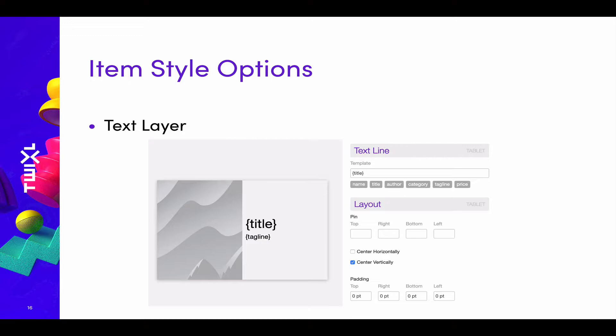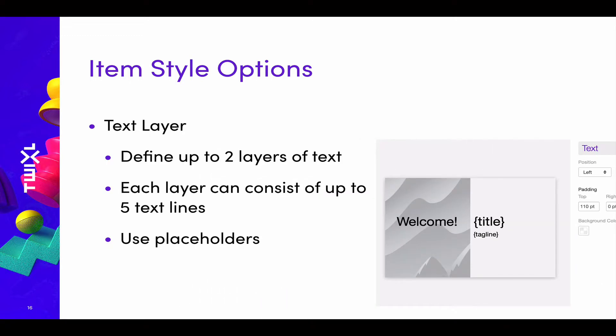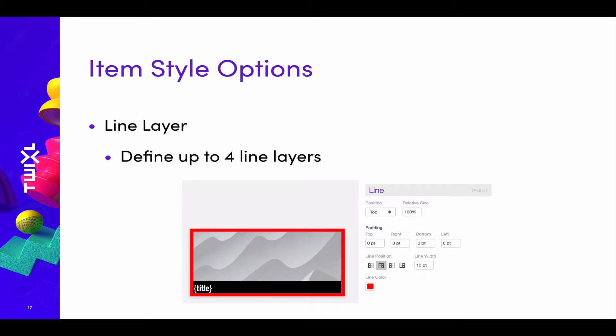The next item is the text layer. In your cell, you can define up to two layers of text, and each of those layers can consist of up to five text lines. You can use the same placeholders mentioned earlier in your text layer. The last item style option is the line layer — you can define up to four line layers. The four lines can be positioned left, right, top, and bottom, or anywhere within the cell, and you can also select the line color. We are now offering a lot of extra capabilities in terms of what you can display within your cells and how easy it is to implement.